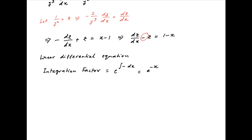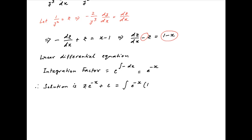Therefore, the solution of the linear differential equation is given by z times the integrating factor e^(−x), plus the constant of integration, is equal to the integral of e^(−x) times the right-hand side of the differential equation, which is 1 minus x, dx.